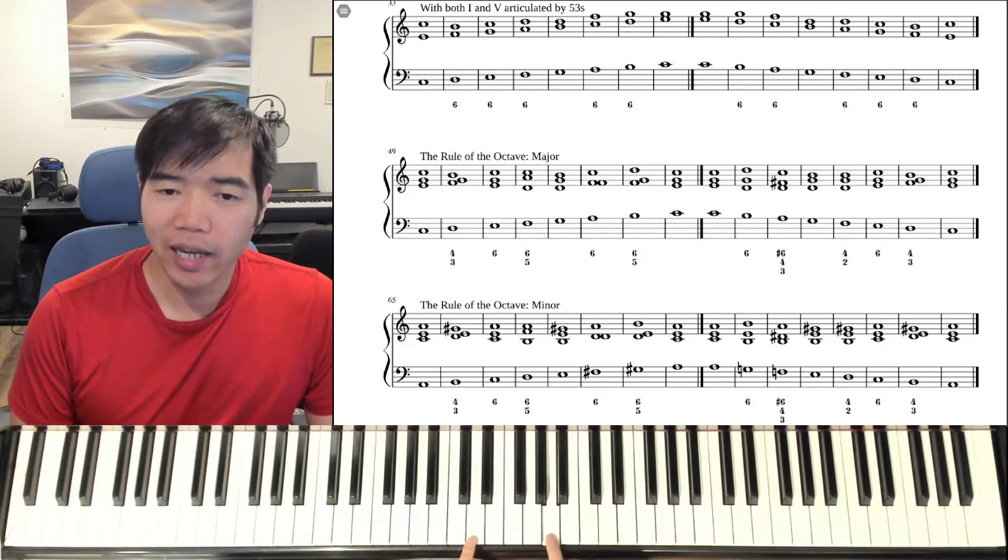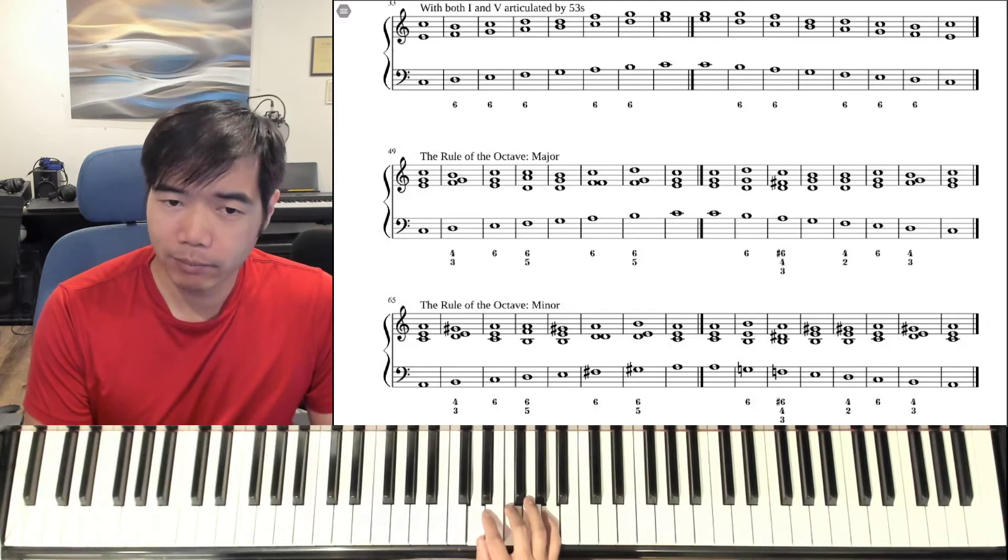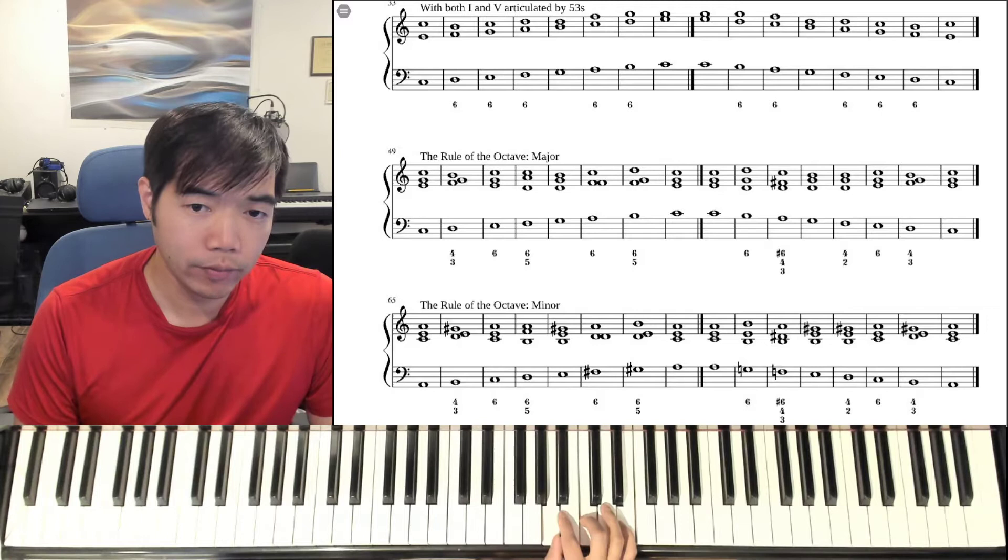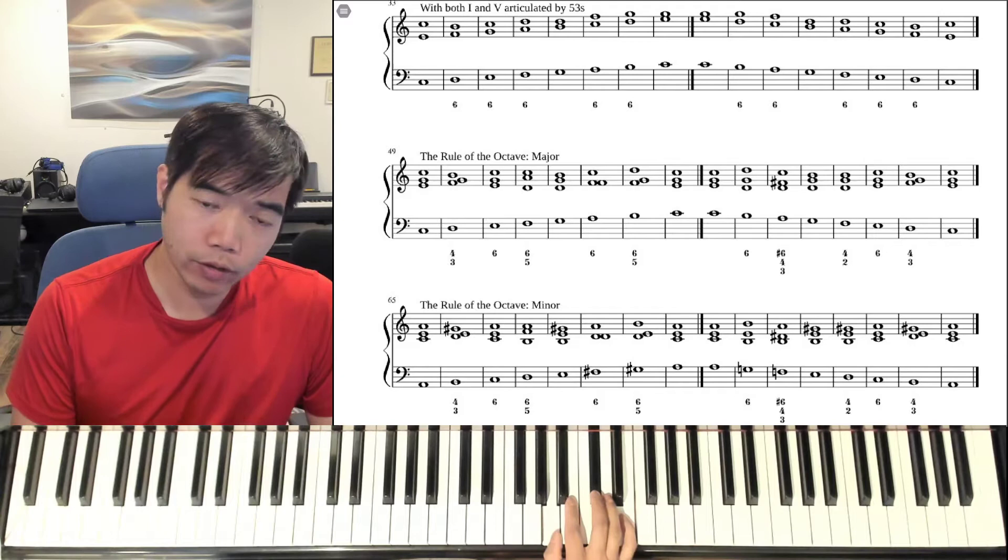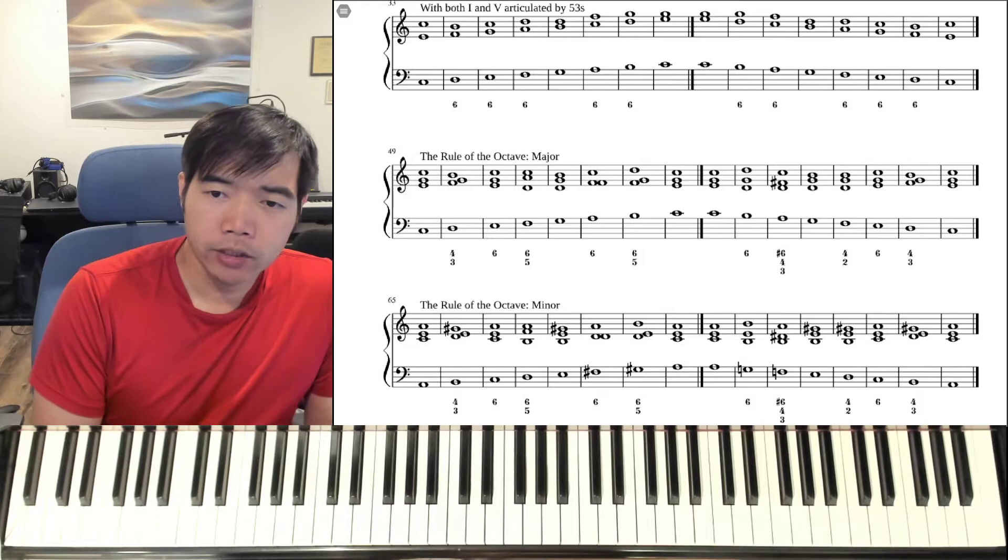For example, if you take D, if we go up a fifth, that would be A. So if we have D in the key of C major, that would be D minor. The A chord would be A minor. You can make this major by adding the C sharp.